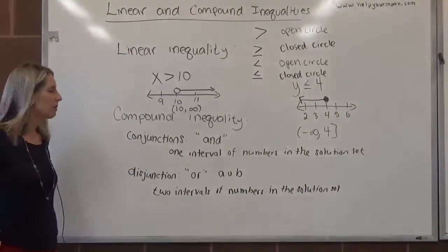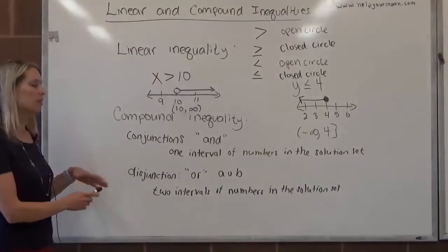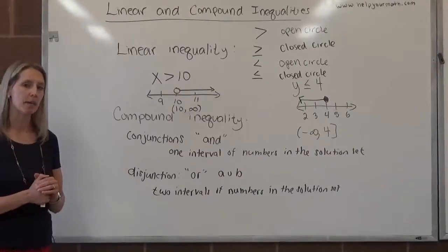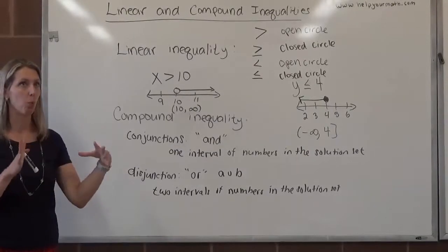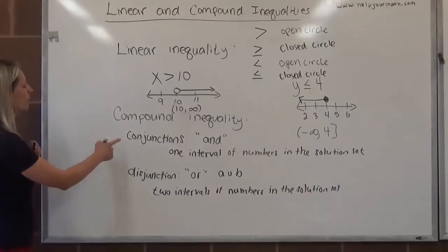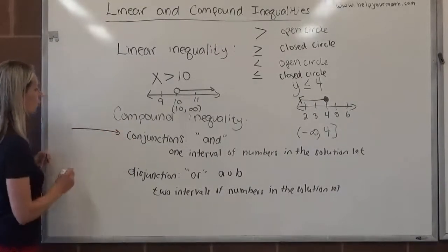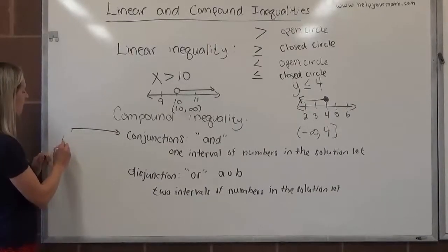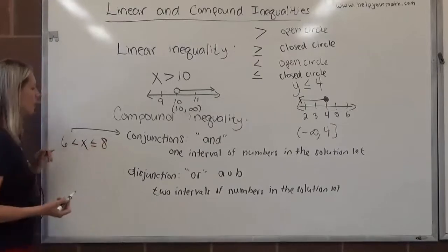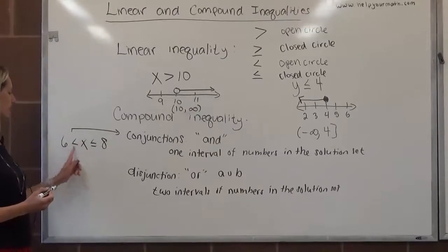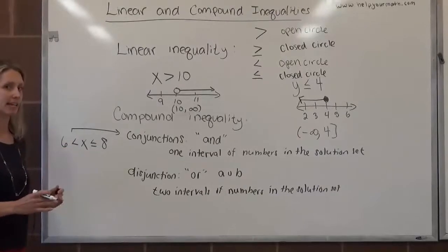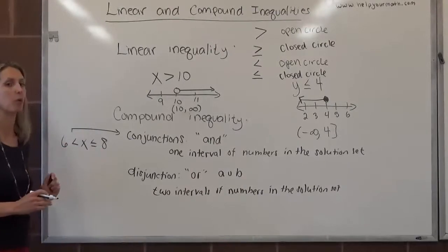Just real quick talking about the way that we can write the solutions algebraically. With a conjunction, it's very common to write just one compound inequality for the solution. We might be able to write a solution for a conjunction as 6 is less than x is less than or equal to 8. This is a compound inequality taking two things, so x has to meet two requirements.